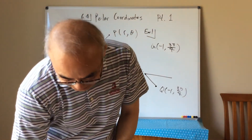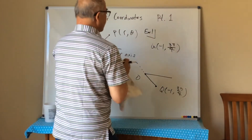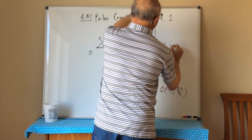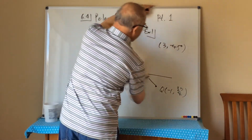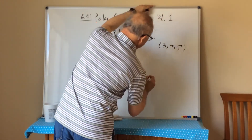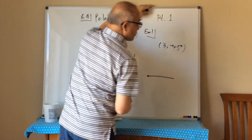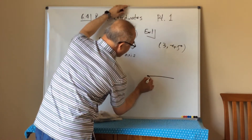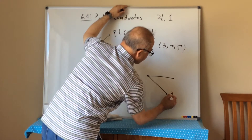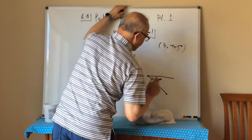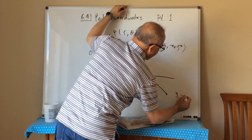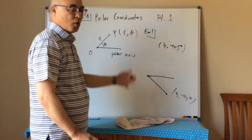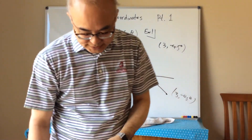Part c is (3, -45 degrees). We start from the origin with the polar axis and go negative 45 degrees — down this way — then go a distance of 3. So this point is (3, -45°). This is the polar coordinate system.